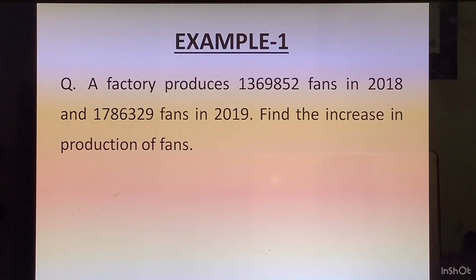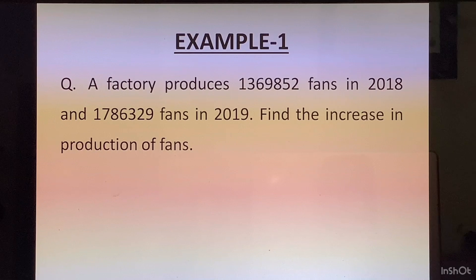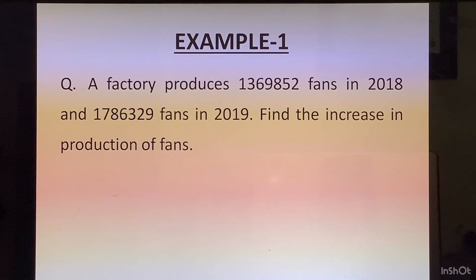Let us look at the example. A factory produces 1,369,852 fans in 2018 and 1,786,329 fans in 2019. Find the increase in production of fans. So here they have given us the number of fans produced in 2018 and also the number of fans produced in 2019. All we have to do is find the increase in production of fans — that means how many more fans did they produce in 2019. To find that increase number we have to subtract in this sum.